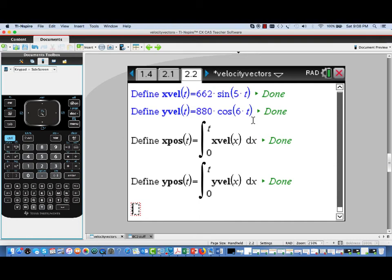And by anti-differentiating, we can recover the position function. Now we weren't given an initial position, so I'll just assume that we'll call the initial position the origin. So I've set up these two integral functions that will give me the position of the particle at each time t.